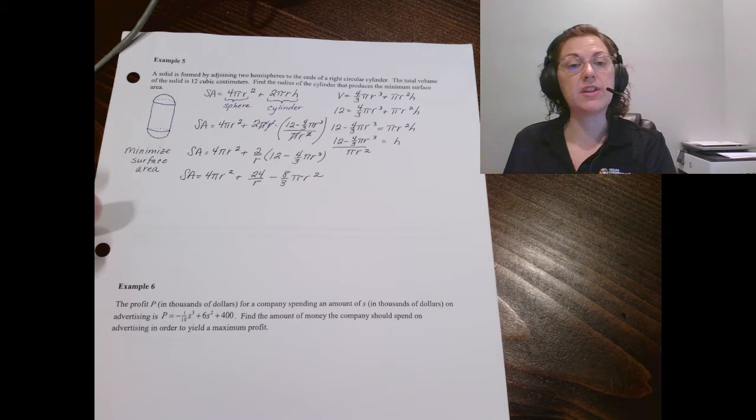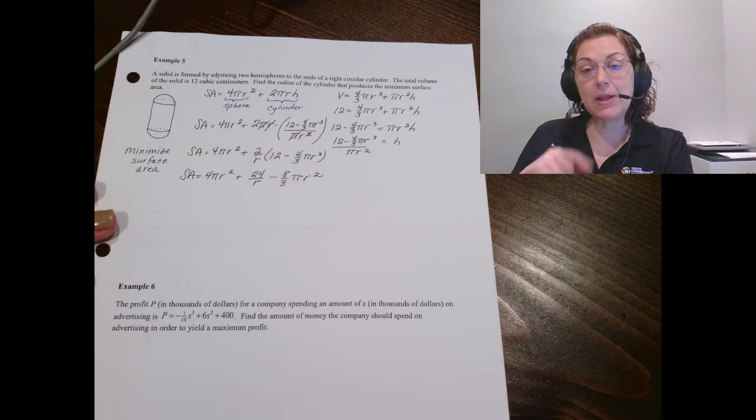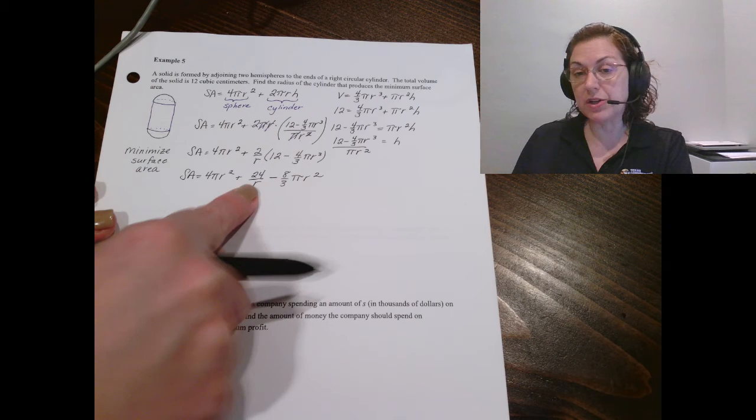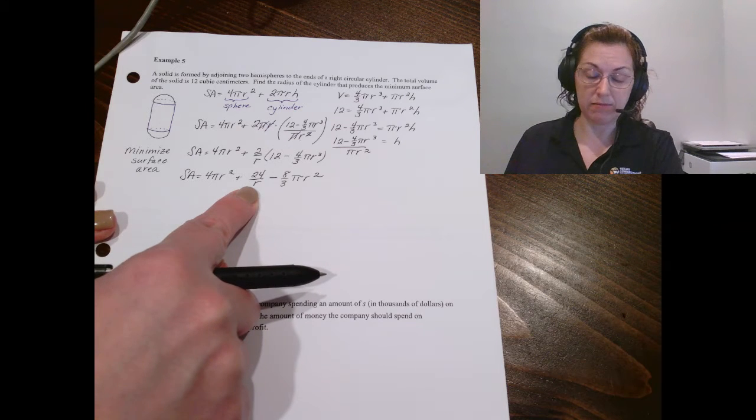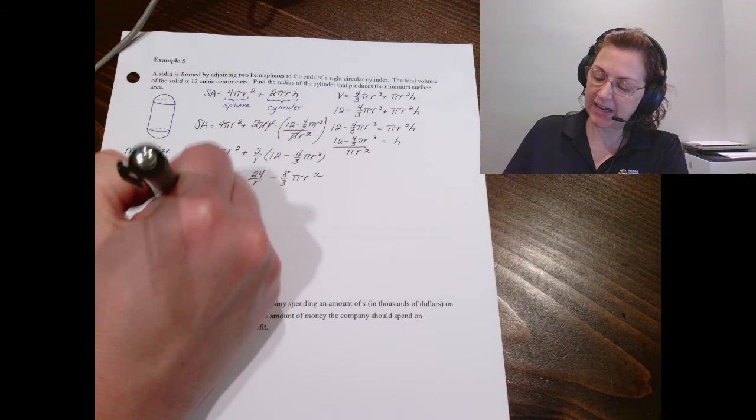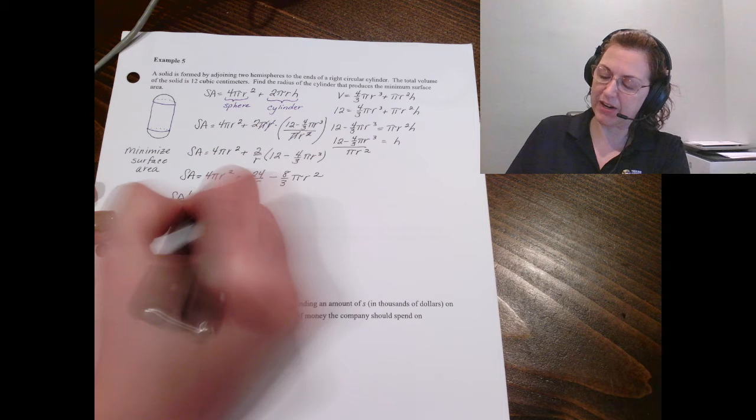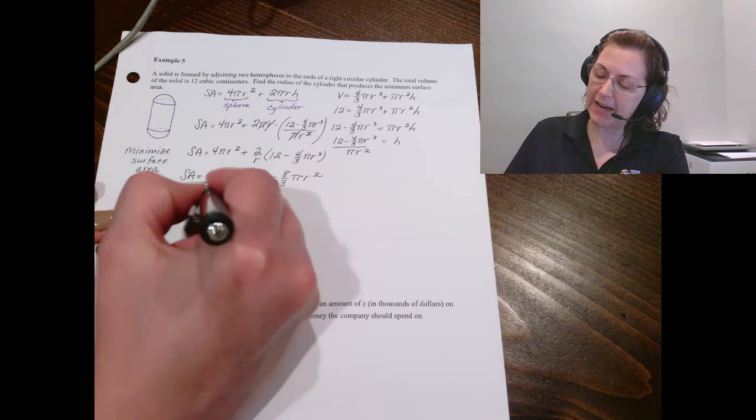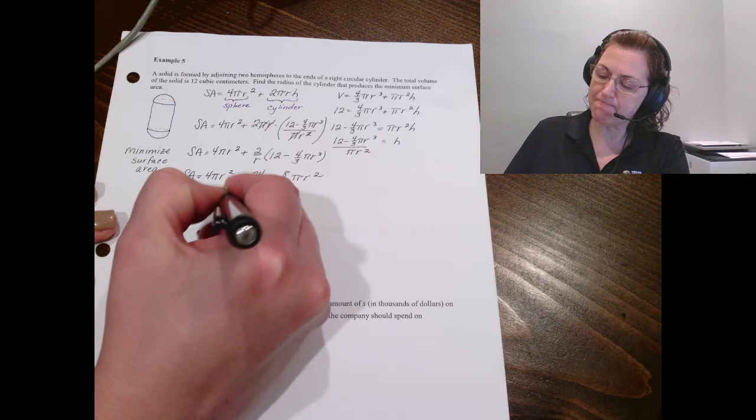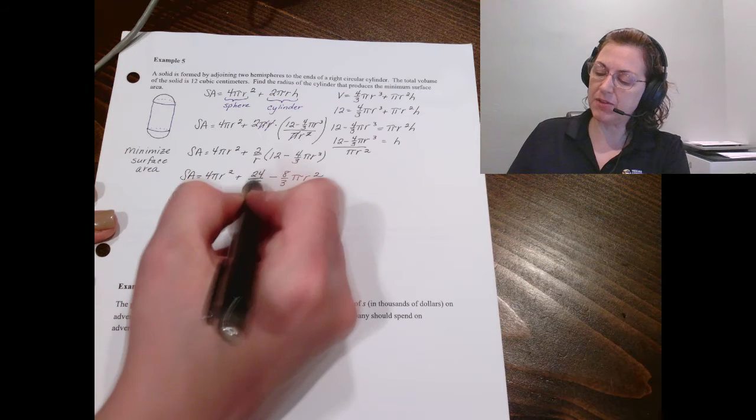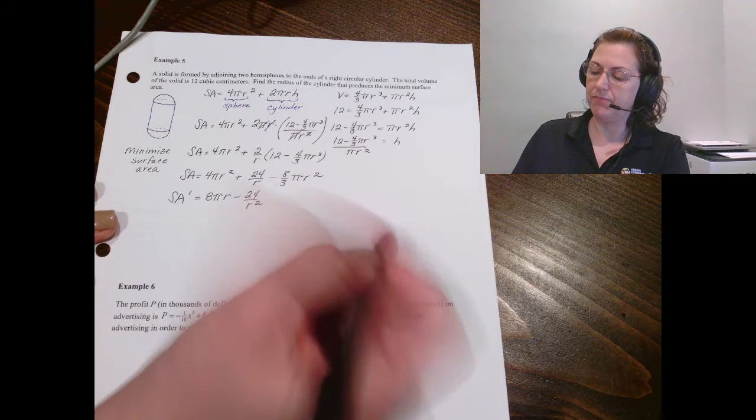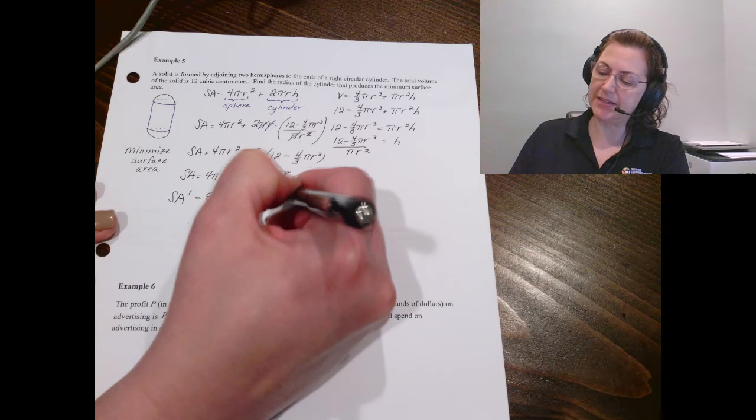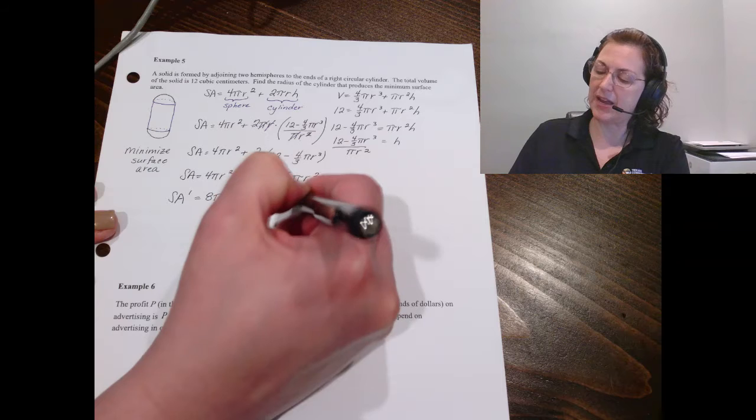The only other thing I would do is I will remind you we're going to treat 24/r as 24 times r to the negative 1. So that when we take the derivative of the surface area with respect to r, I'm going to get 8πr. This one I'll get -24/r². And then I'll get -16/3πr.